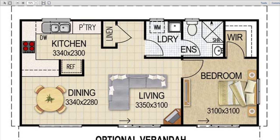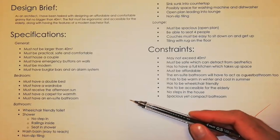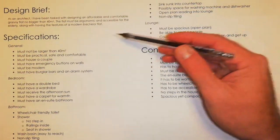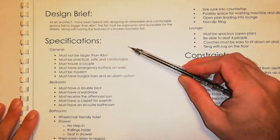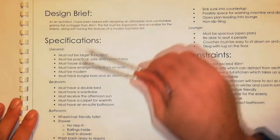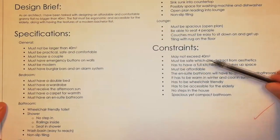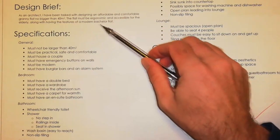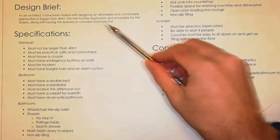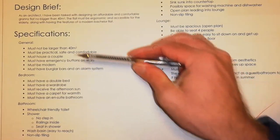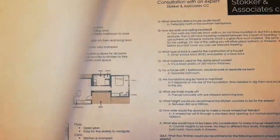Let's look at actual design proposals from previous students to give you a better idea. Here is an example of a design brief with specifications and constraints — just the initial paragraph, but remember you'll need two paragraphs: your specifications and then your constraints.